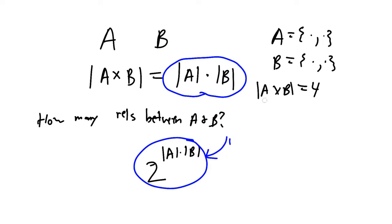As an exercise, try listing all 16 relations. You'd go through each possible combination — include just the first pair, include the first and second, the first and third, and so on. You'll discover there are exactly 16. One of them is the empty set, one is the entire Cartesian product, and all the rest are somewhere in between.